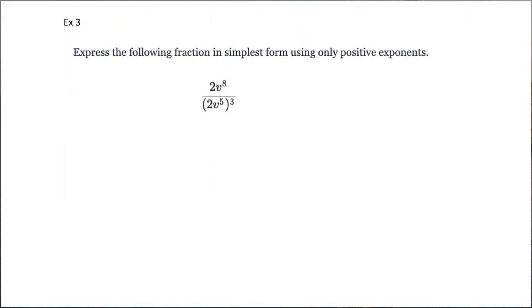Okay, let's take this next one. Again, simplest form means reduce the fraction. Only positive exponents means no negative exponents. So if it's a negative exponent, put it in the other part of the fraction. So if we have this, notice that 8 is only to the v on the top. So this is 2 v to the 8th, divided by 2 cubed, v to the 15th.